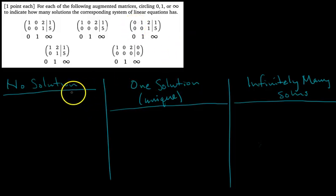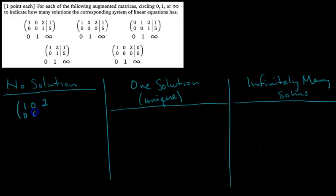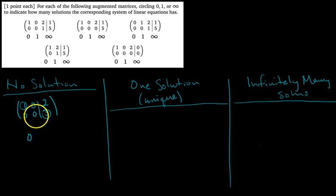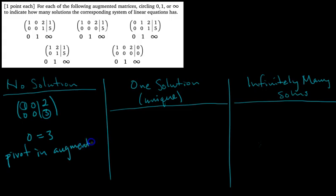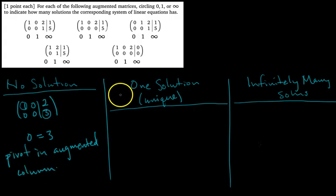So let's go through each case. For no solution, we'd be looking at a row-reduced augmented matrix where there's a pivot in the augmented column. For example, the second row would read zero times x1 plus zero times x2 equals three, which is just zero equals three — and we know that's impossible no matter what we pick for x1 and x2. So if there's a pivot in the augmented column (the last column after the vertical line), we say there's no solution. This is called an inconsistent system.